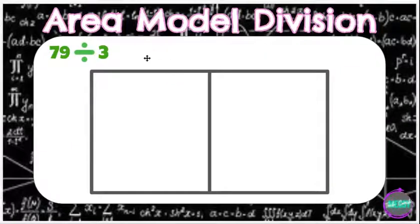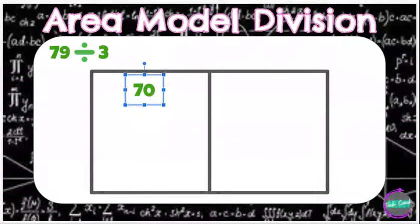However, in the area model for multiplication, we put them on top of the box. For division, we're going to put them inside of the box. So 79 would break down into 70 and 9.